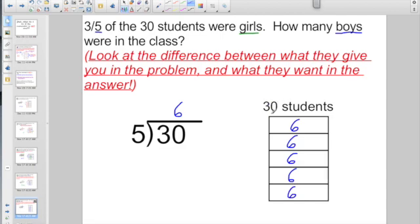Okay, so three fifths of the students were girls. So let's go ahead and mark this girls. So if you got a class where three fifths of the class is girls, well, you're either a girl or you're a boy in the class, right?